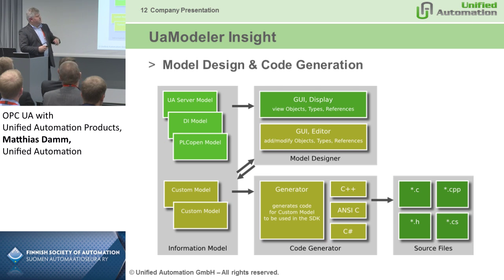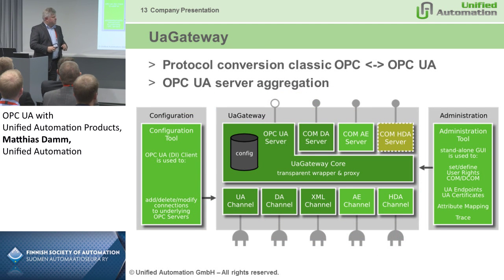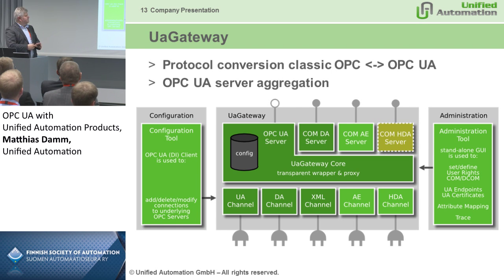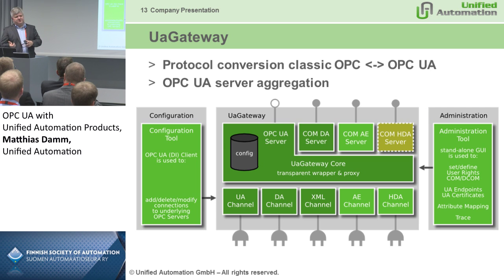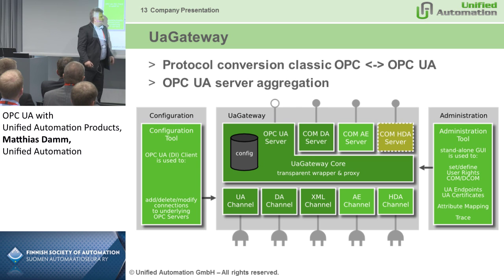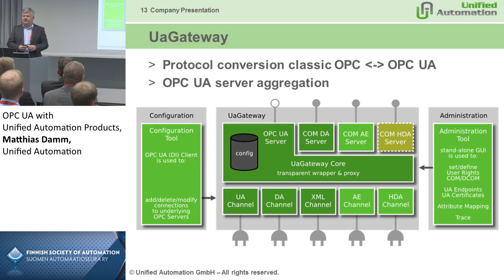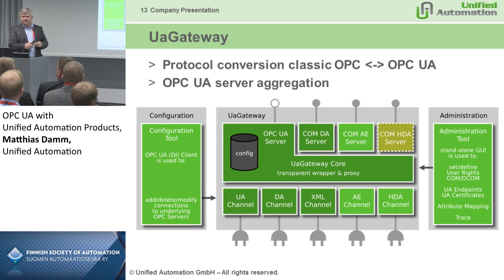The last tool is UA Gateway — it's a protocol converter. You can connect any OPC UA client to any classic OPC interface, or classic OPC clients to OPC UA. It has different OPC UA client interfaces and different OPC server interfaces. It also allows OPC UA aggregation — you can aggregate different OPC UA servers into one address space. It's not limited to data access; it has the full blown OPC UA functionality for the aggregation part.